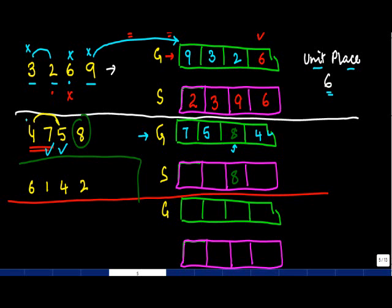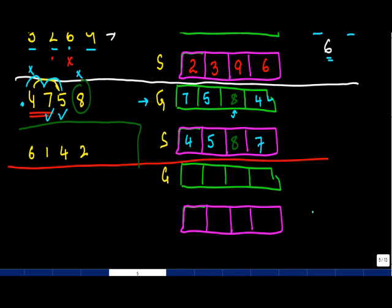For the smallest number in this example, from 4, 7, and 5 I pick the smallest first, which is 4. Then from the remaining 5 and 7, I pick 5 as the next smallest, and then 7. So the smallest number is 4, 5, 7, 8.